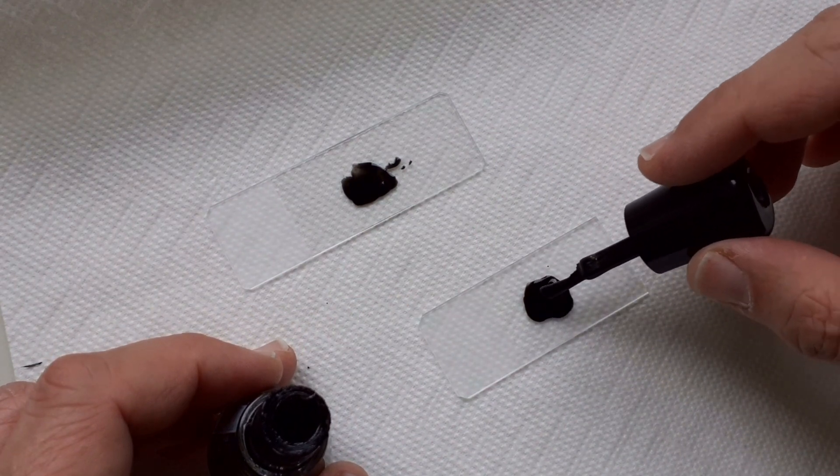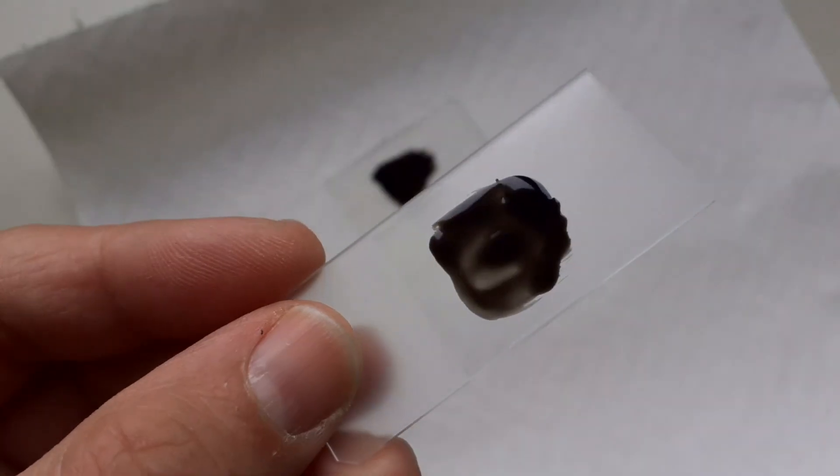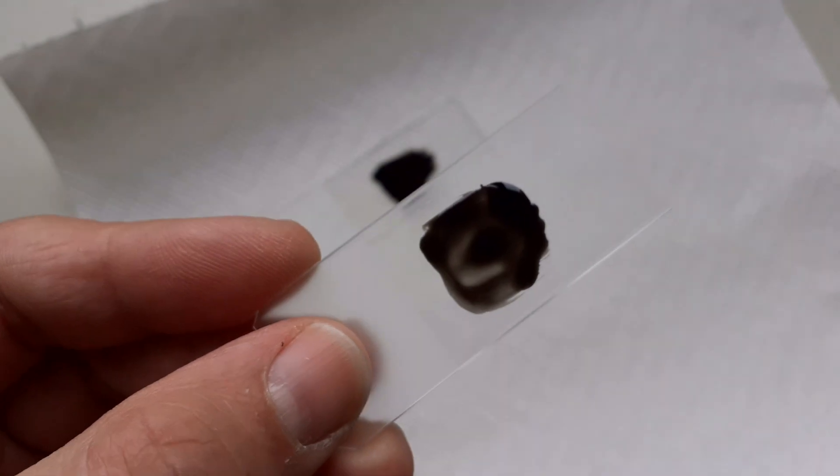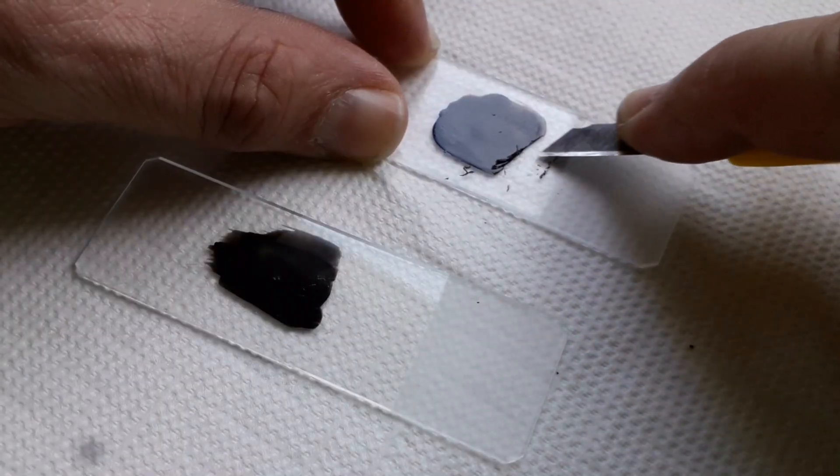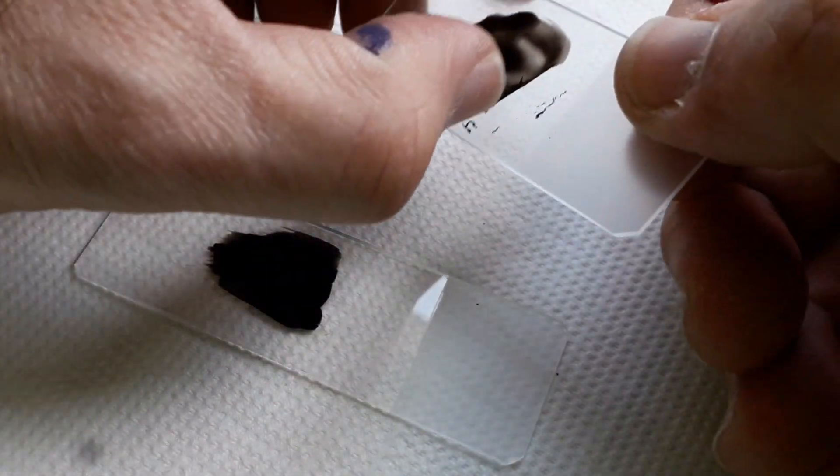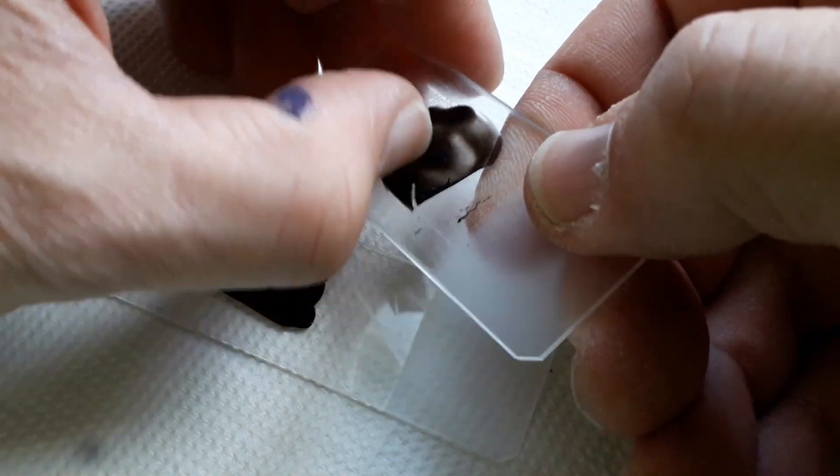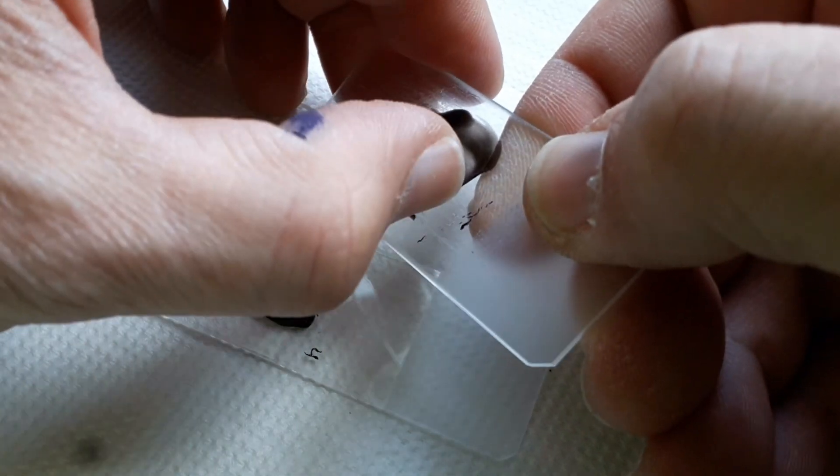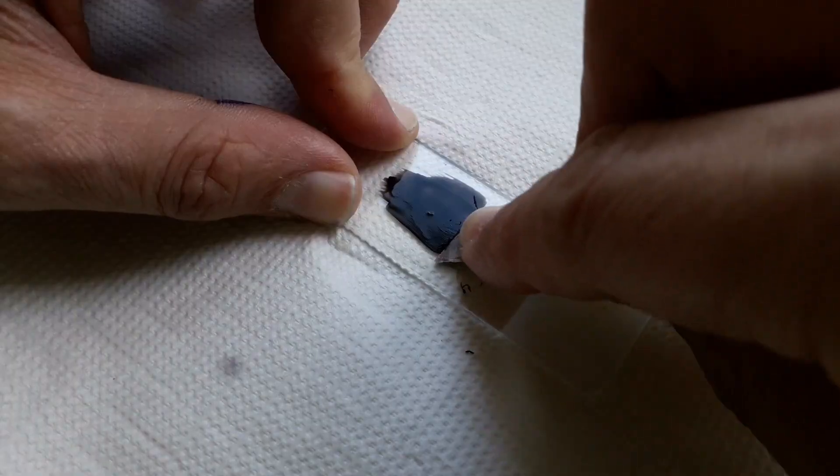And after a short drying time I tried to remove both of them and I wanted to figure out which one is now stronger. So that's the slide that I treated with sandpaper and I now tried to scratch it with my fingernail, and I was able to remove the nail polish a little bit but generally it stuck quite well.